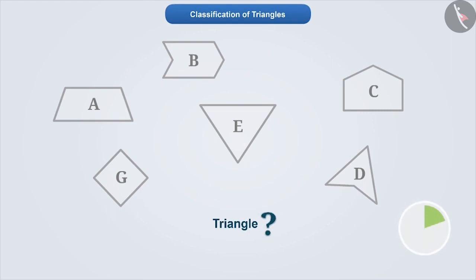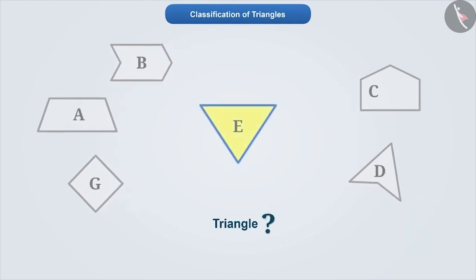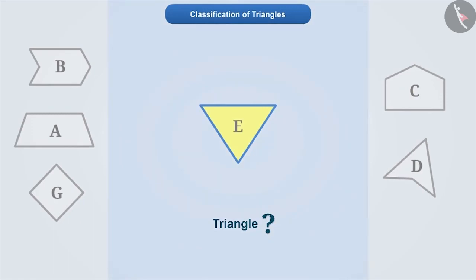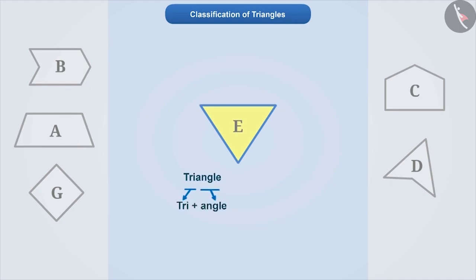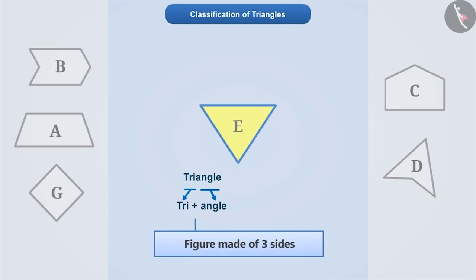You may pause the video and try to find out. Have you chosen figure E? If yes, then congratulations! You have correctly identified the triangle. To correctly identify a triangle, it is important to understand its concept correctly. Triangle is made of 'tri' plus 'angle',